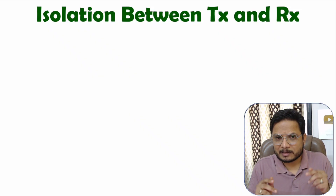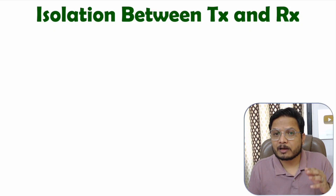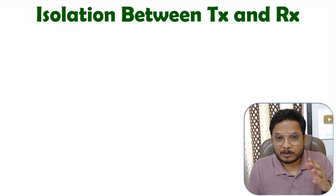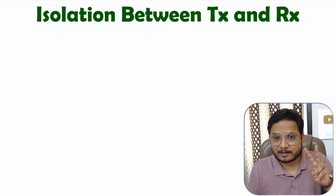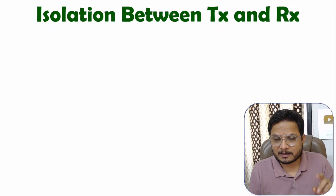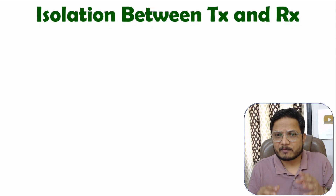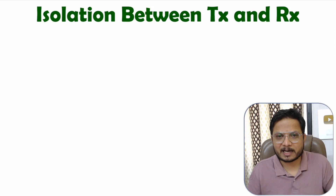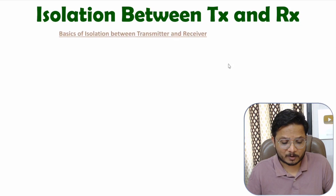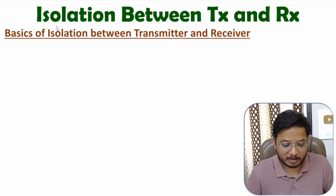In this video, I will explain isolation by two techniques: one is by having two separate antennas, and second is by having usage of microwave devices. First, let us begin with the basics of isolation between transmitter and receiver.